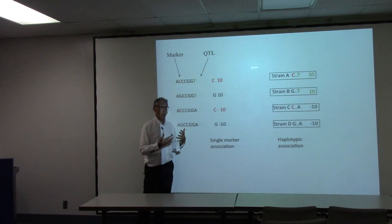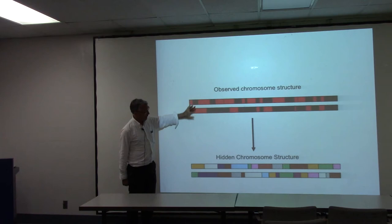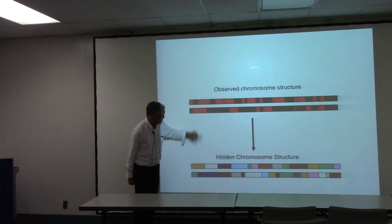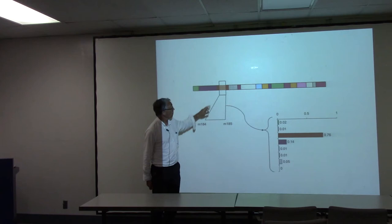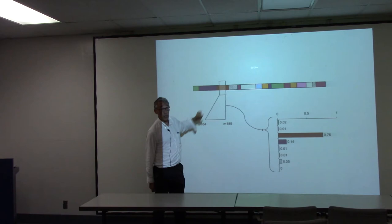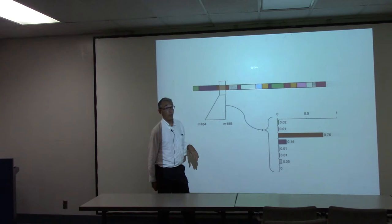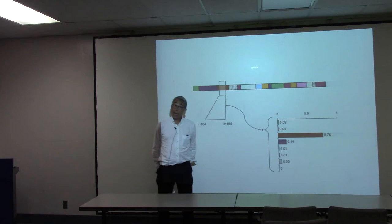The question then resolves to: how do we work out mouse haplotypes? We consider the problem as one of having an observed chromosome structure — only two alleles — concealing a hidden chromosome structure where any particular position descends from one of the eight progenitor strains. We solve this using a dynamic programming algorithm. The output comes in a form where rather than using a simple genotype we have the probability of haplotypic descent, and that is the information we use for mapping.